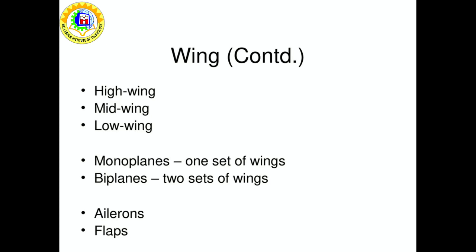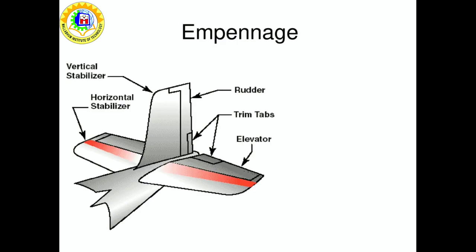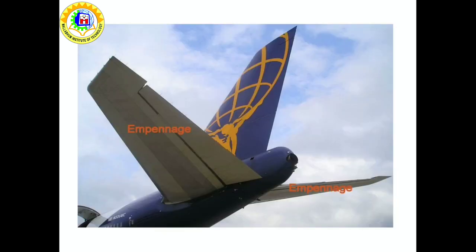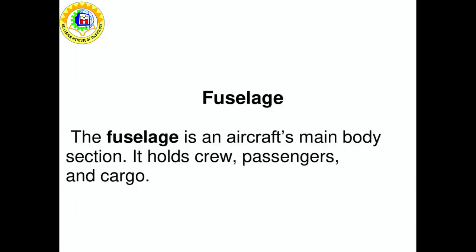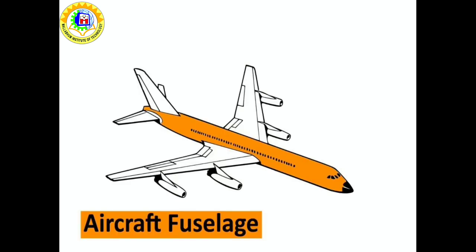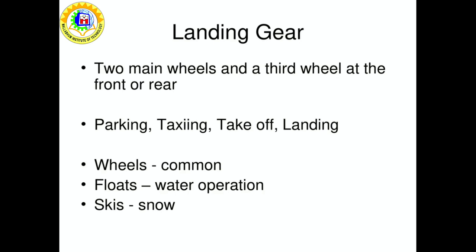A flap is a high-lift device used to reduce the stalling speed of an aircraft wing at a given weight. The empennage is the tail of the airplane and consists of a horizontal stabilizer, a vertical stabilizer, elevators, and rudders. The fuselage, or body of the airplane, holds all the pieces together. The pilots sit in the cockpit at the front of the fuselage, and passengers and cargo are carried in the rear.